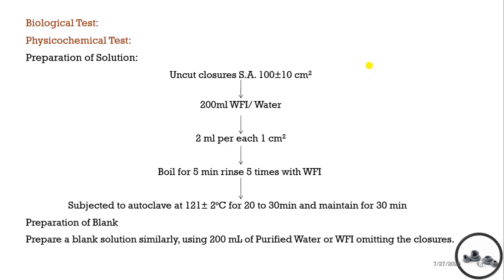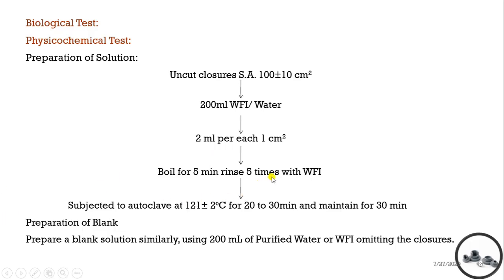For physicochemical testing, we need to prepare the solution. We take uncut closures with a surface area of 100 ± 10 cm². For each 100 cm² surface area, we take 200 ml of water for injection or purified water — that means 2 ml per 1 cm² surface area. We boil it for 5 minutes and rinse it 5 times with water for injection.